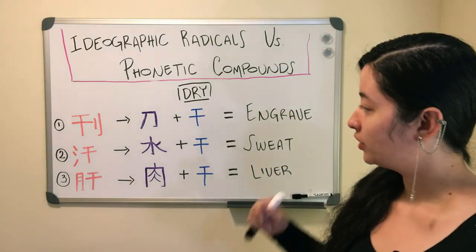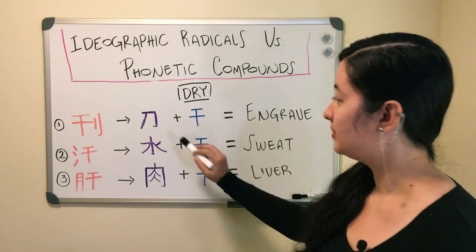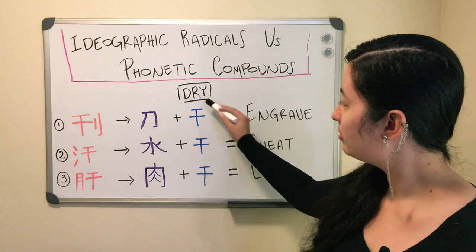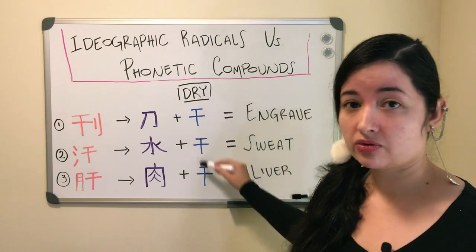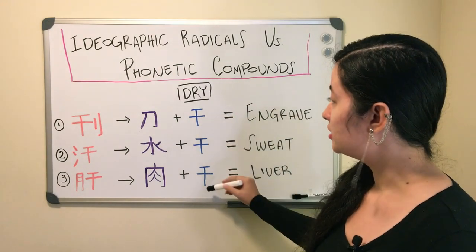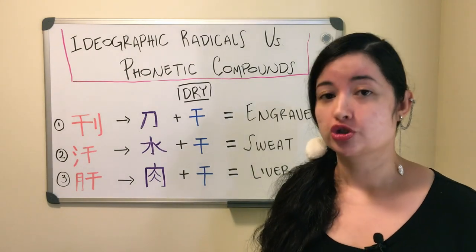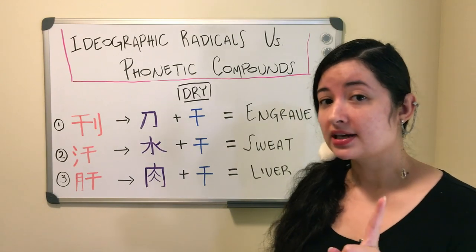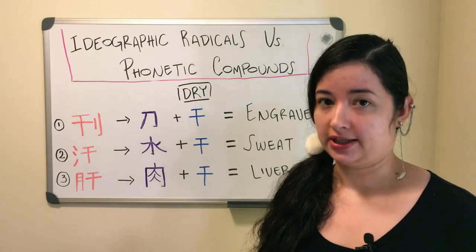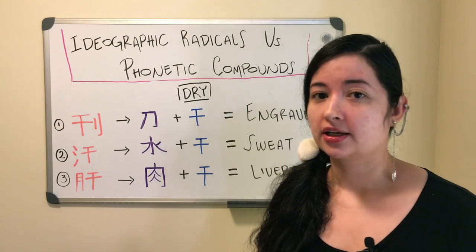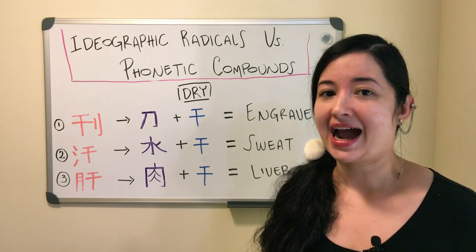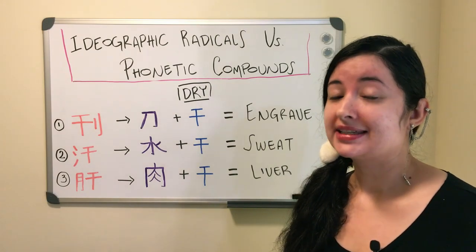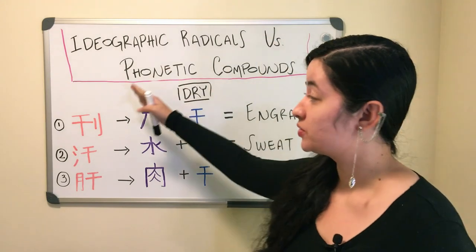Now we can look at it once again and we see that the main radical has a relationship with the meaning. However, how about this compound right here? This compound comes from the kanji DRY. What is the relationship right here? The main relationship is the ON reading. The ON reading for the kanji DRY is KAN, and that reading is taken by all these three other kanji.